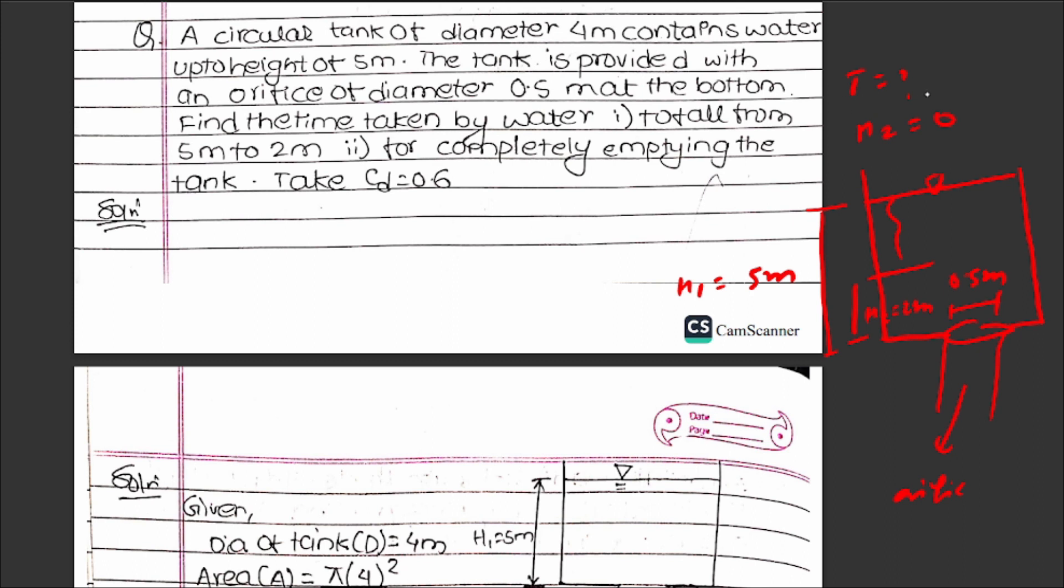For the derivation: Volume equals area times height. Considering a small section, the volume change dV equals area times ds. This is negative because the water level is falling, moving down against gravity.